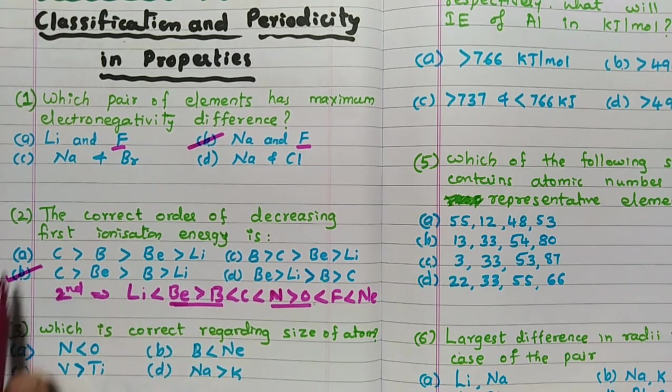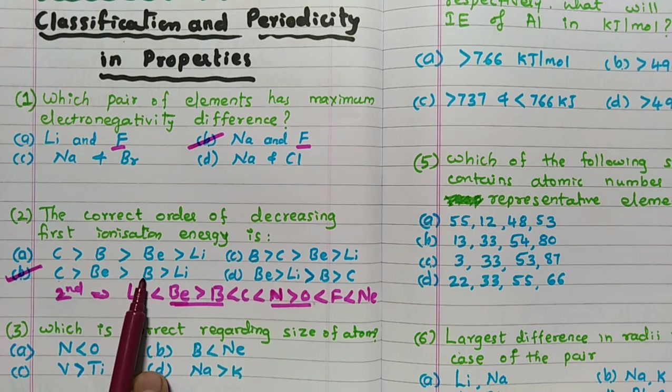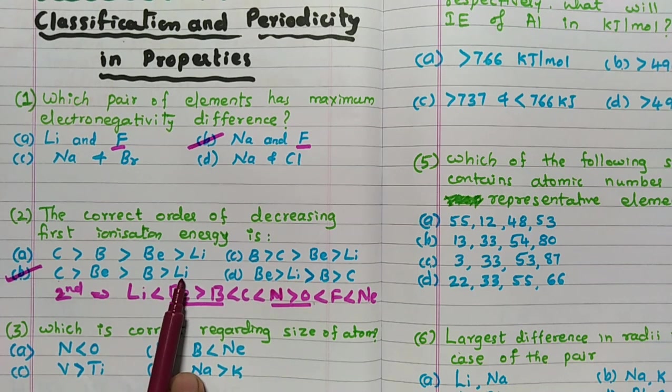So this order is correct for option B: carbon more than beryllium, more than boron, more than lithium is correct.